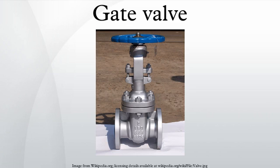A gate valve, also known as a sluice valve, is a valve that opens by lifting a round or rectangular gate wedge out of the path of the fluid. The distinct feature of a gate valve is the sealing surfaces between the gate and seats are planar, so gate valves are often used when a straight-line flow of fluid and minimum restriction is desired.